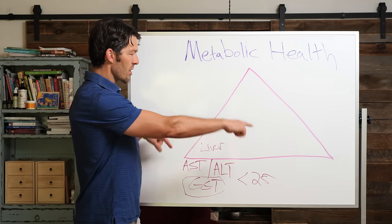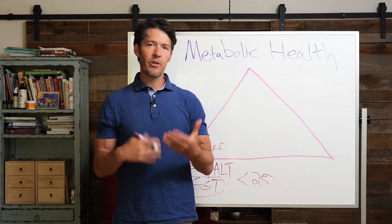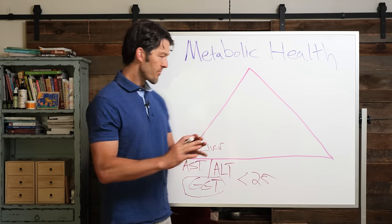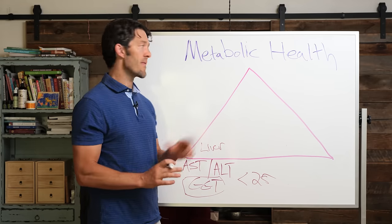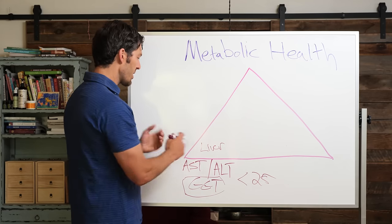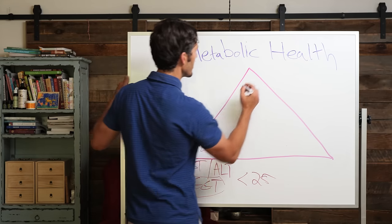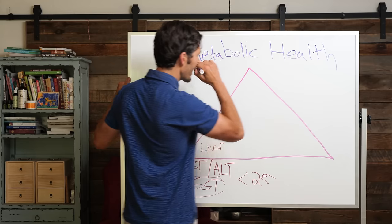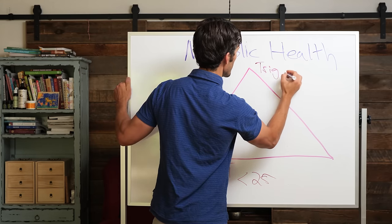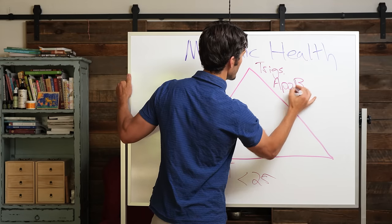This is part of the challenge of the binary way we view our health — it's good or bad, you passed or you failed. We want to view things in context, and that's how we get a better assessment of your metabolic health. So first we look at the liver. Second, when you do your lab work, you're going to look at your lipids. We're going to focus on your trigs — triglycerides — and you can also add on ApoB.